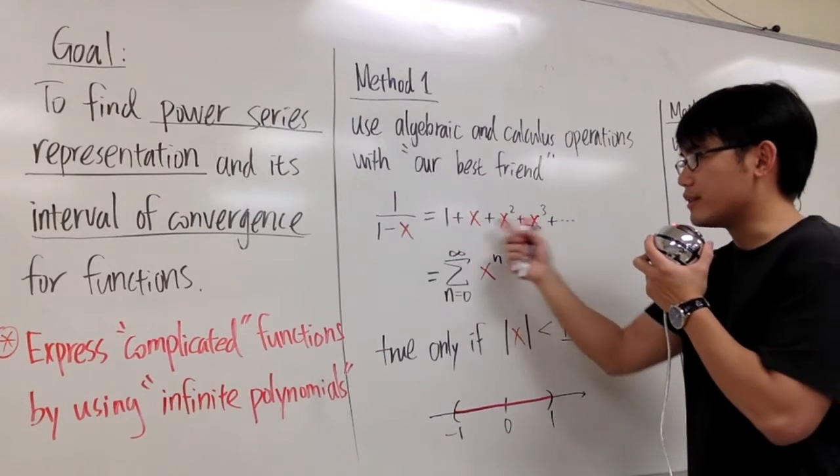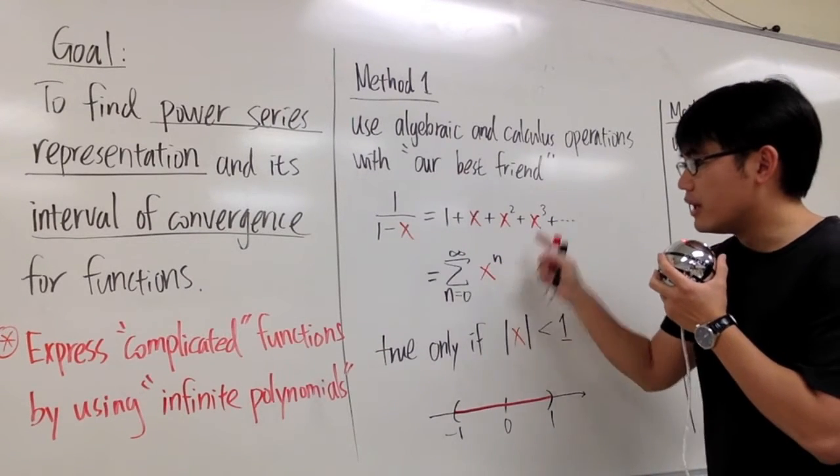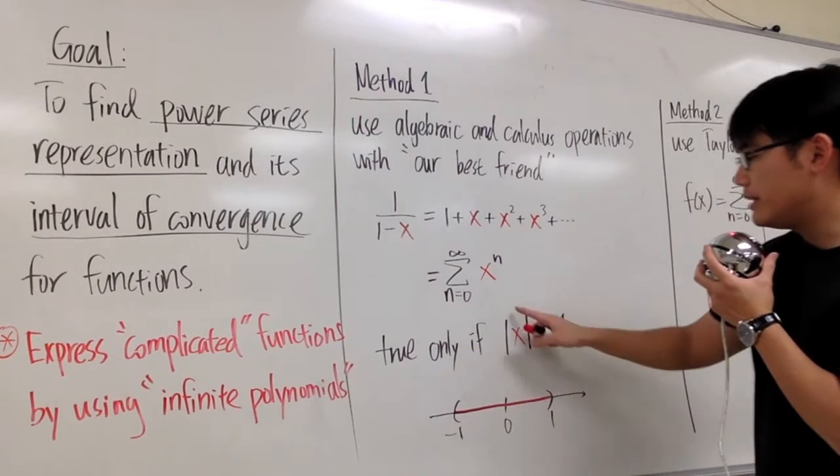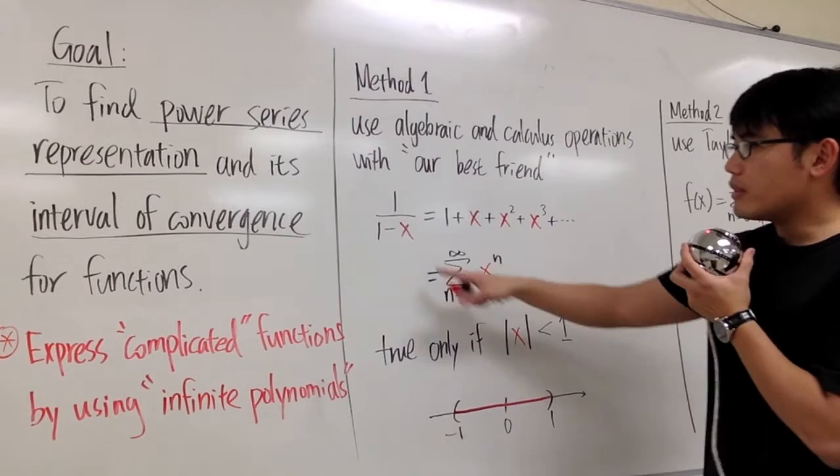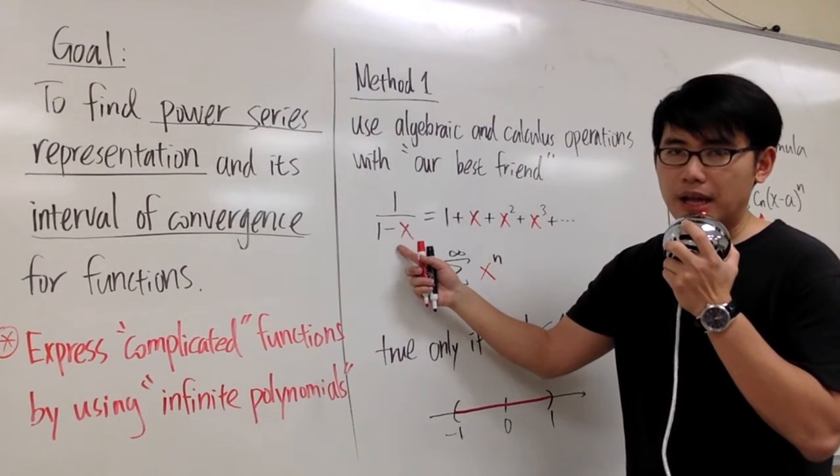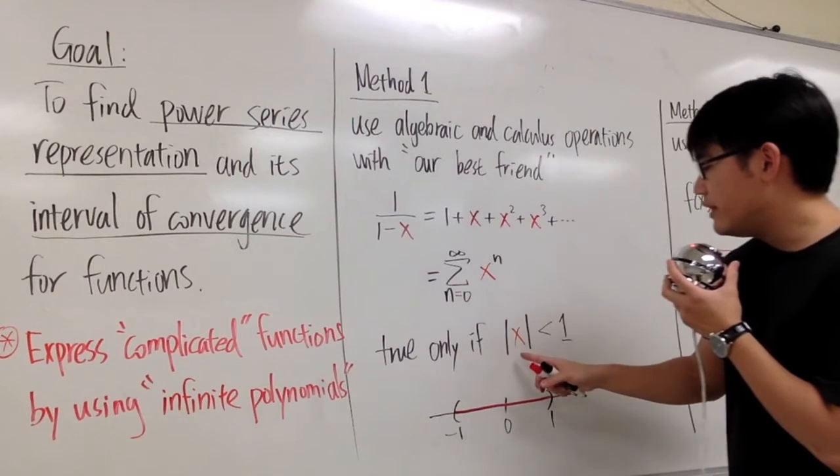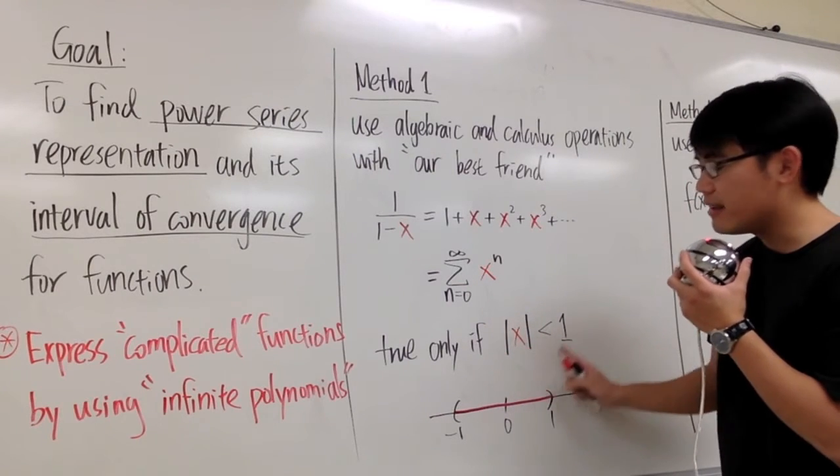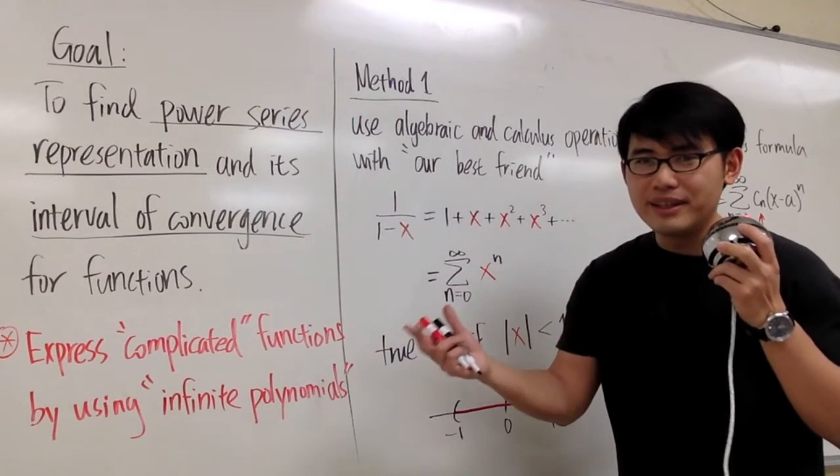However, whenever we're doing these kind of things, we have to be careful with it, because this right here is only true if the absolute value of x is less than 1. So, for example, if I want to plug in x equals negative 1 half, I can use it, because negative 1 half satisfies this condition.